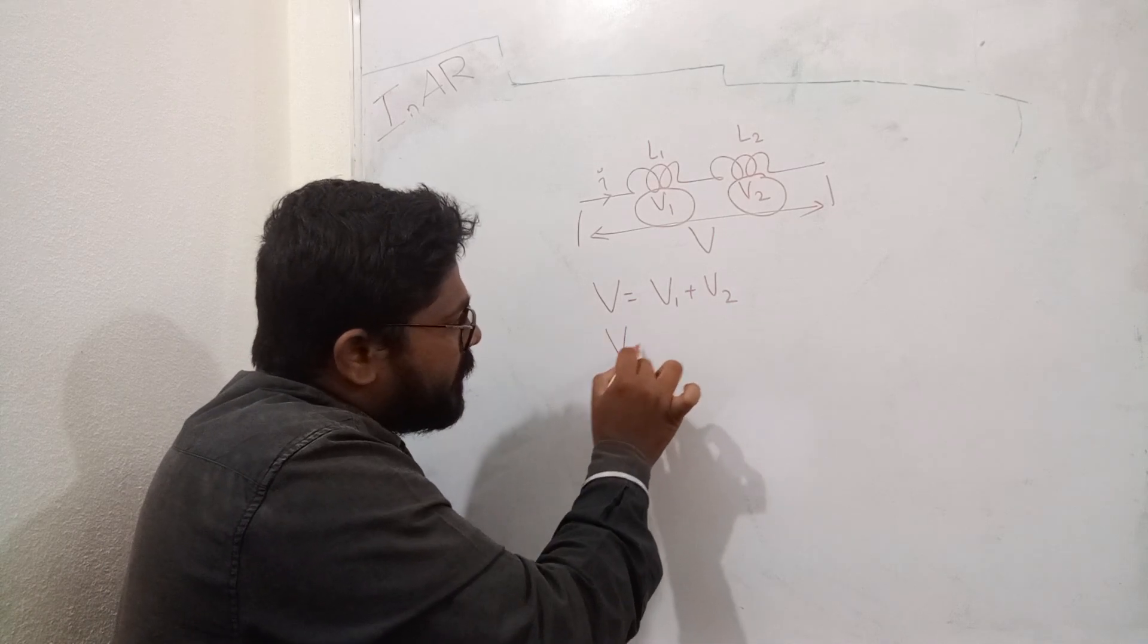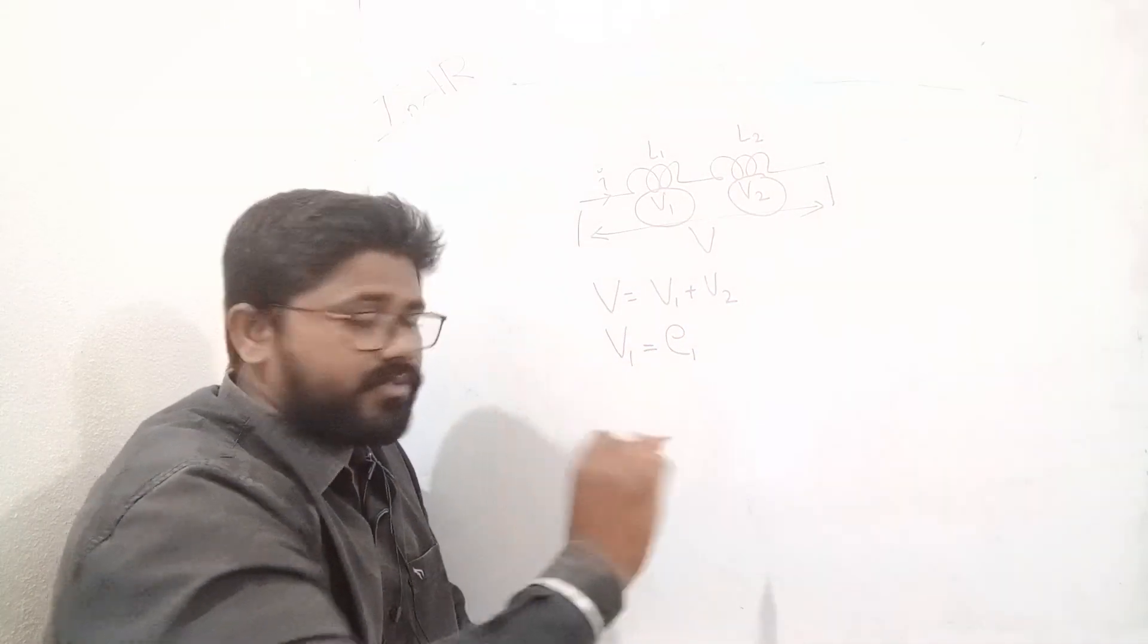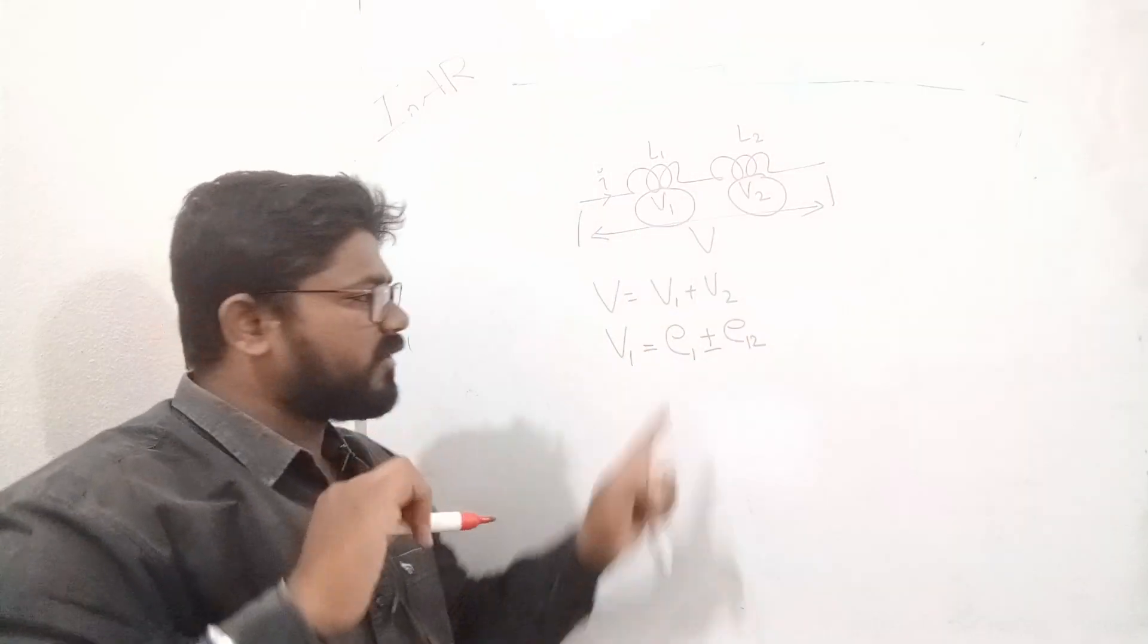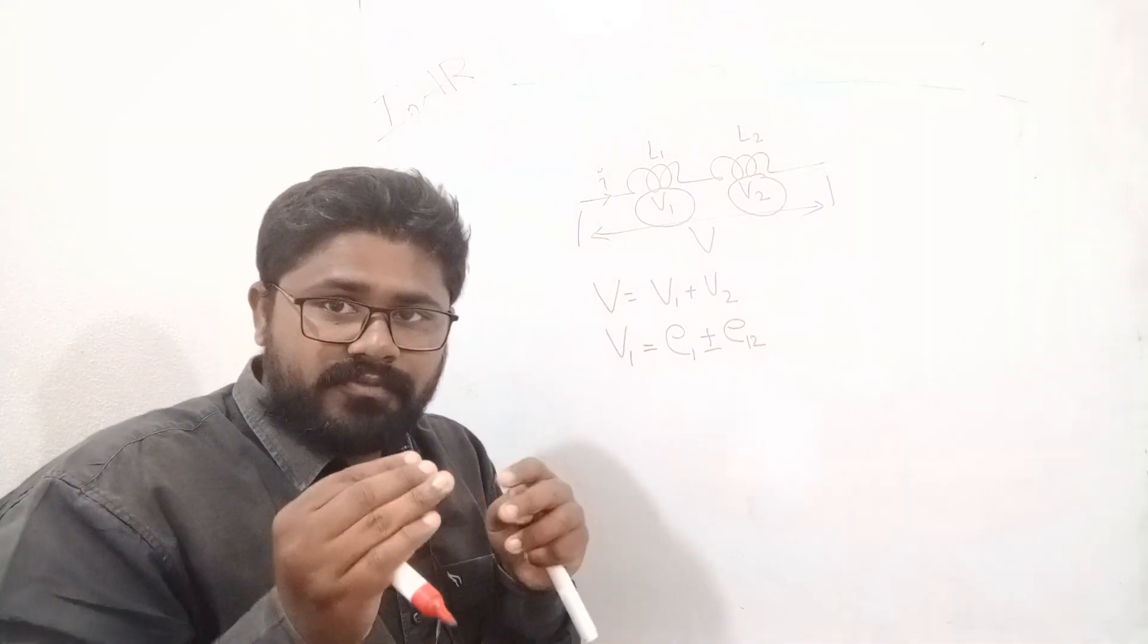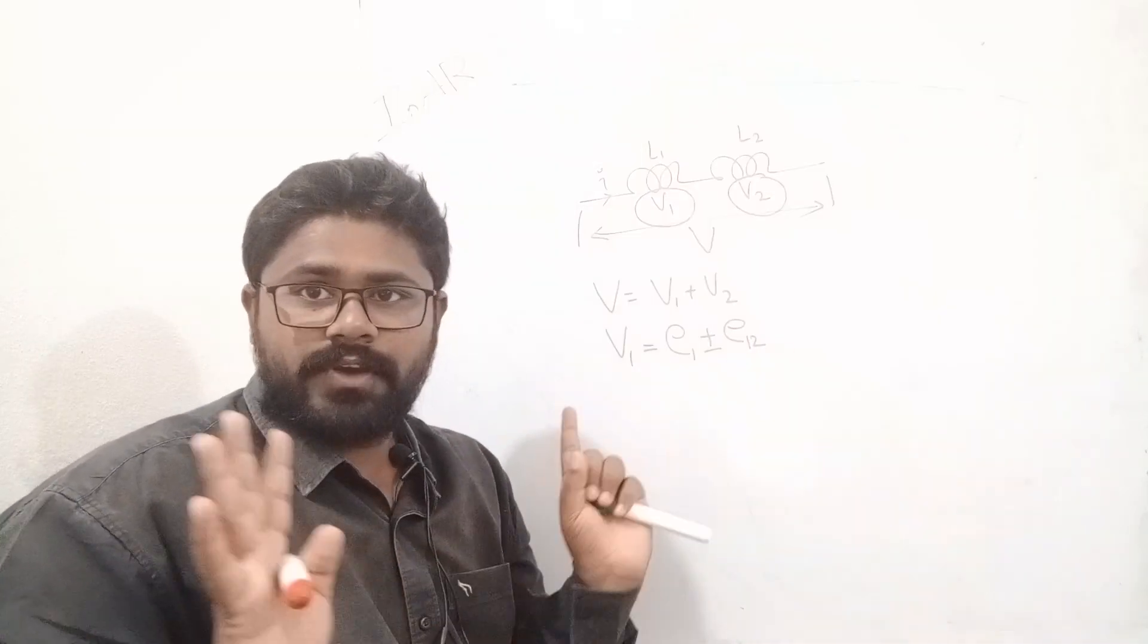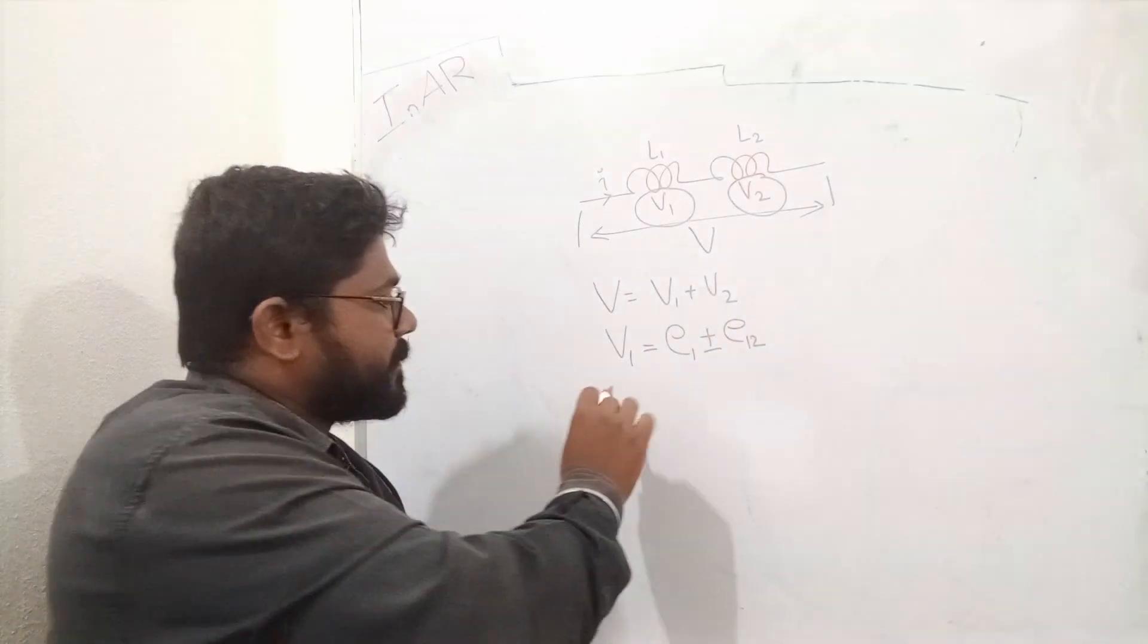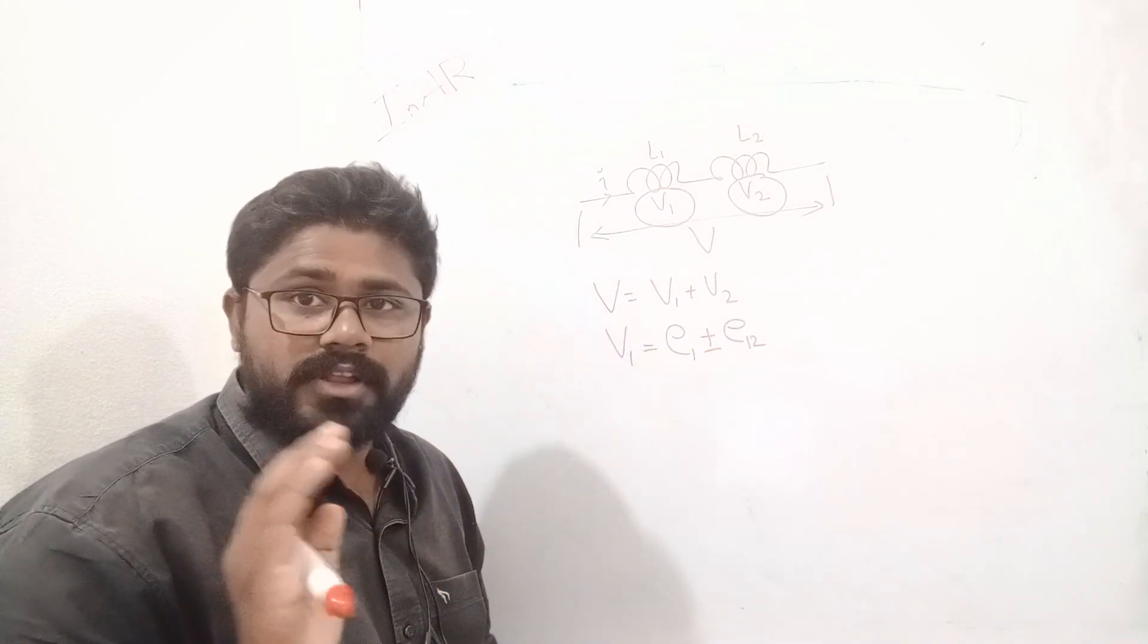The value of this V1 will be equal to self-induced EMF, right? Self-induced EMF plus or minus mutually induced EMF. Plus or minus E12, because of L1, the EMF is induced. That is, E12 can support or oppose. We don't know that. So, that is plus or minus. And for plus or minus decision, we can use dot notation.